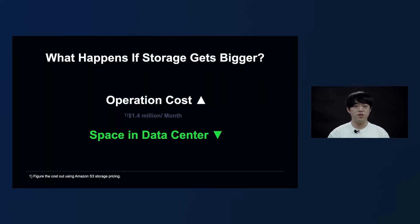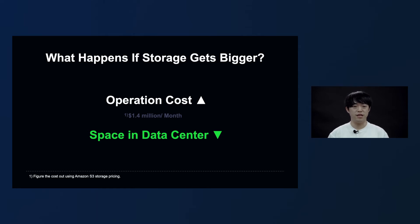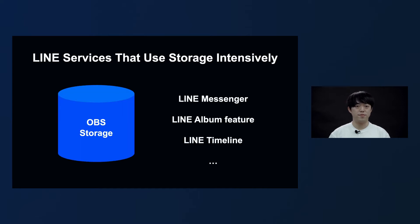The increase in storage usage pushes up operational costs while shrinking the floor space left in the data center. If we calculate the cost of operating 60 petabytes based on the Amazon S3 fee that is widely used, the resulting cost would be approximately $1.4 million per month. Also, if the floor space in the data center becomes scarce, it becomes difficult to increase the number of servers, which could result in a problem occurring in the service. So an effort to save storage was absolutely necessary.